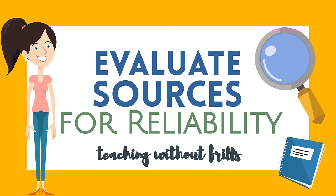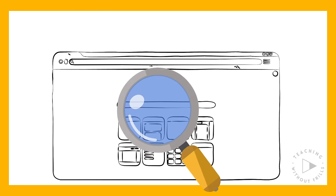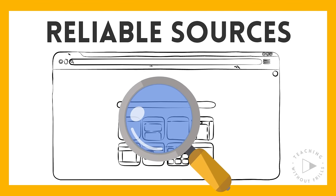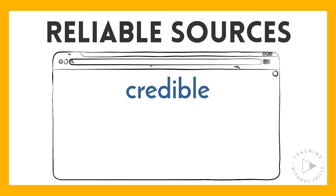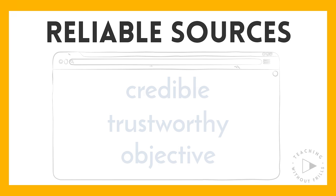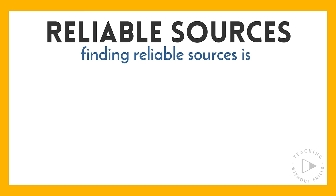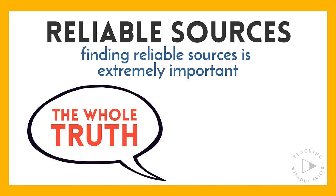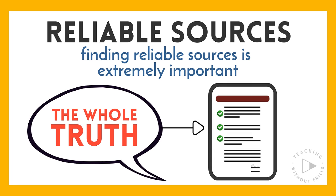Evaluate sources for reliability. When you research a topic, it's important to use reliable sources. Reliable means credible, trustworthy, and objective. Finding reliable sources is extremely important to ensure that we understand the whole truth about the topic we're researching. Only then can we provide the most accurate information to our audience.